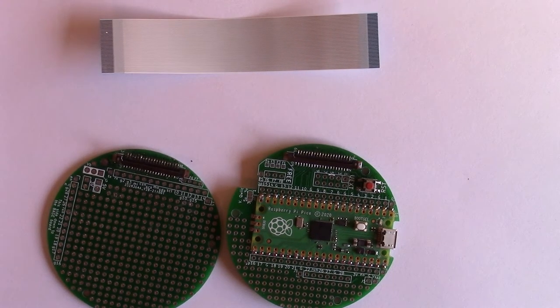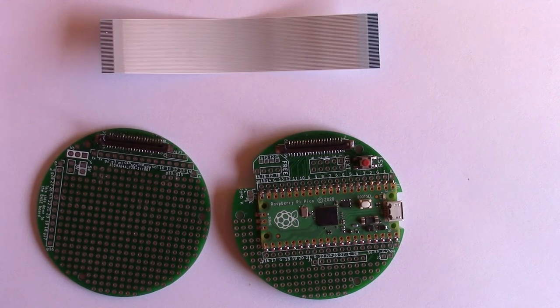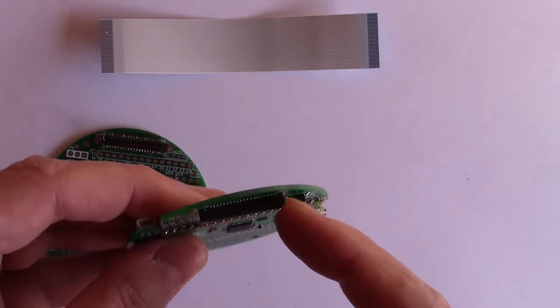Hi, it is Dominique. Here is the Kansat Pico kit and we will see how to place the ribbon between the two boards.